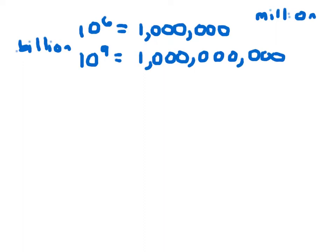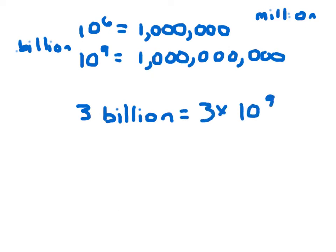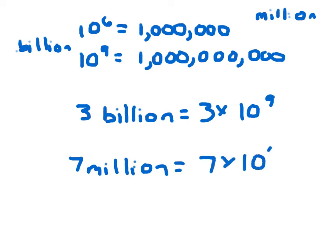As those numbers get larger, the process remains very much the same. When we are talking about 3,000,000, then all we're talking about is 3 times 10 to the sixth. When we're talking about 7,000,000, that can be rewritten as 7 times 10 to the sixth.